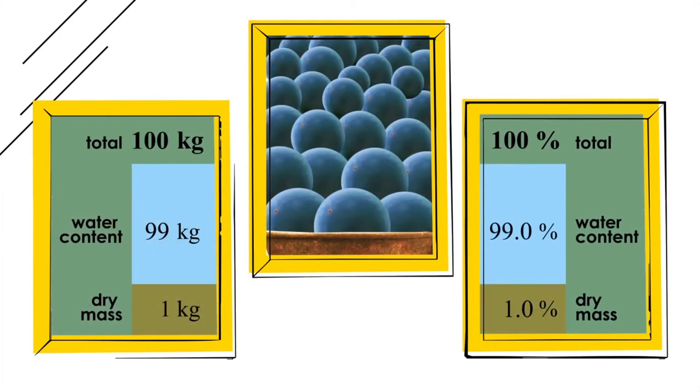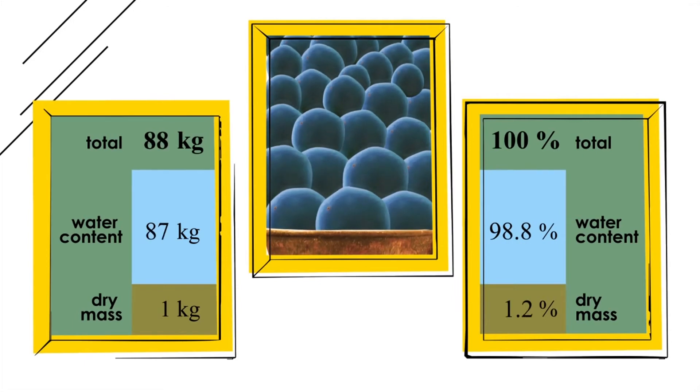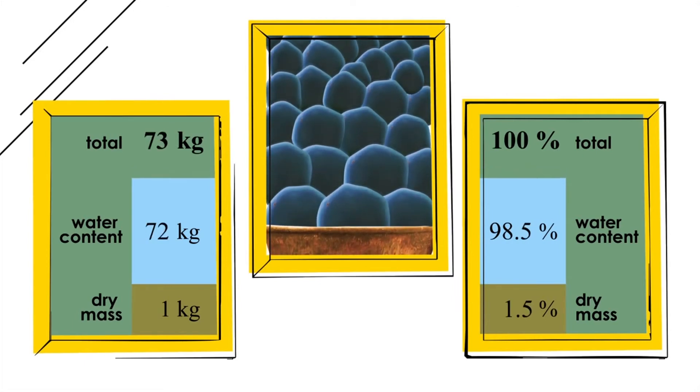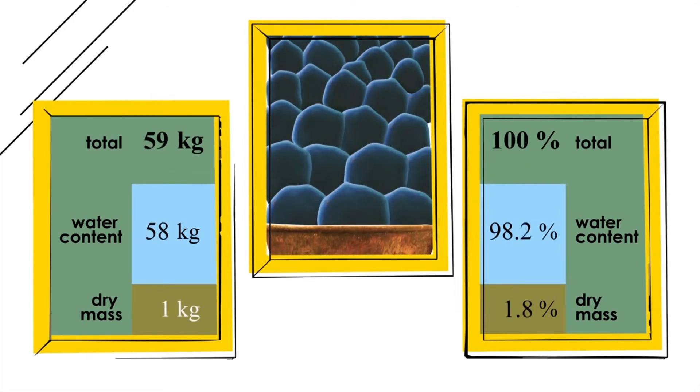Over time only the water portion changes. The dry portion keeps the same weight which is 1 kilogram. In the end the dry portion of 1 kilogram amounts to 2%. If 2% is 1 kilogram, then 100% is 50 kilograms.